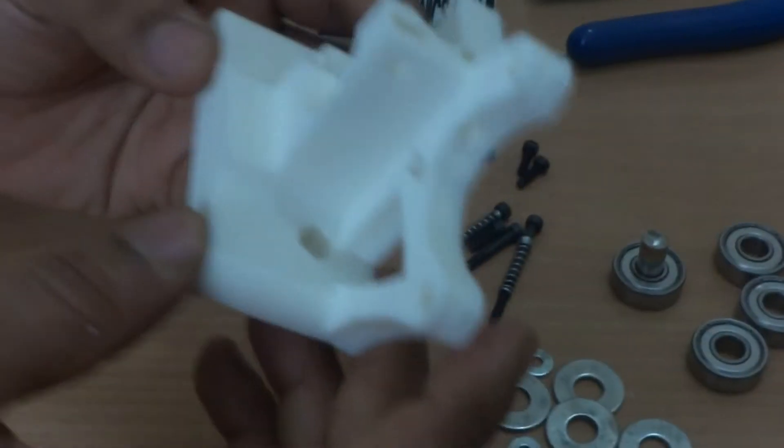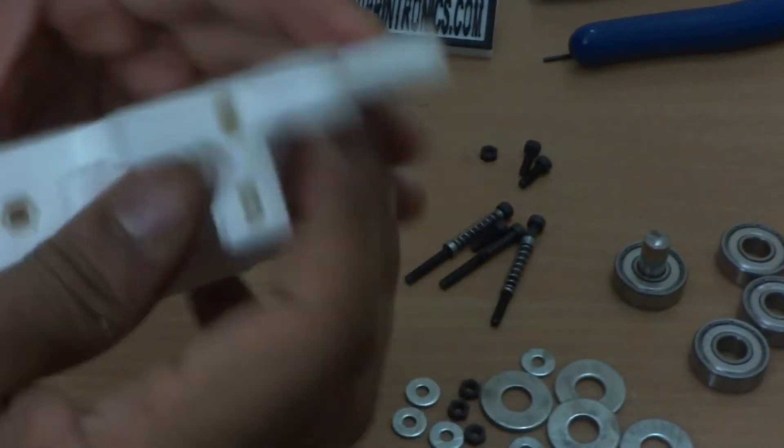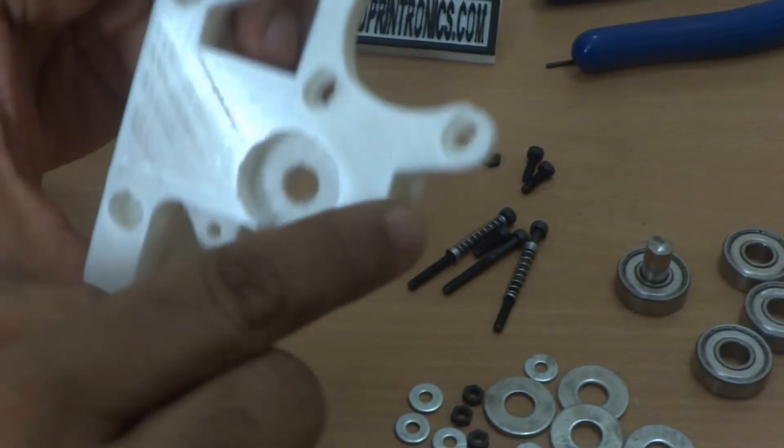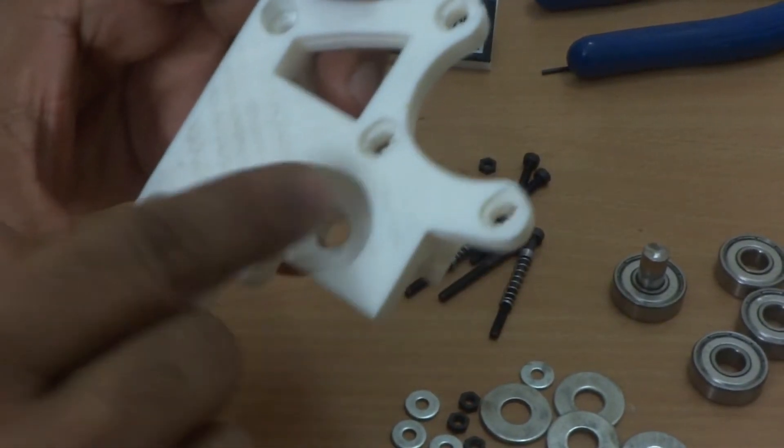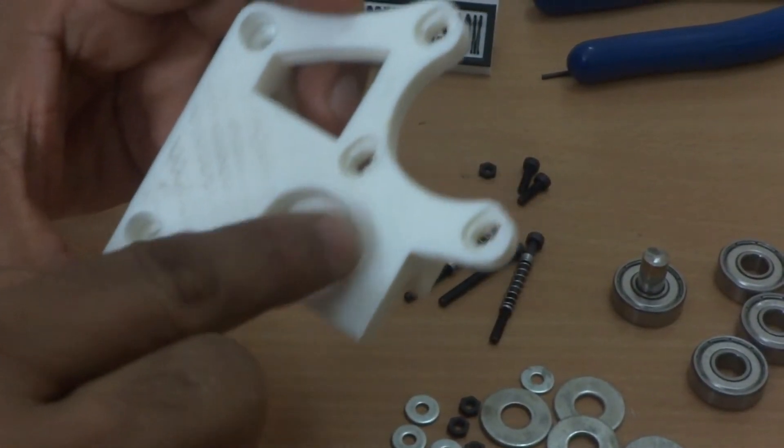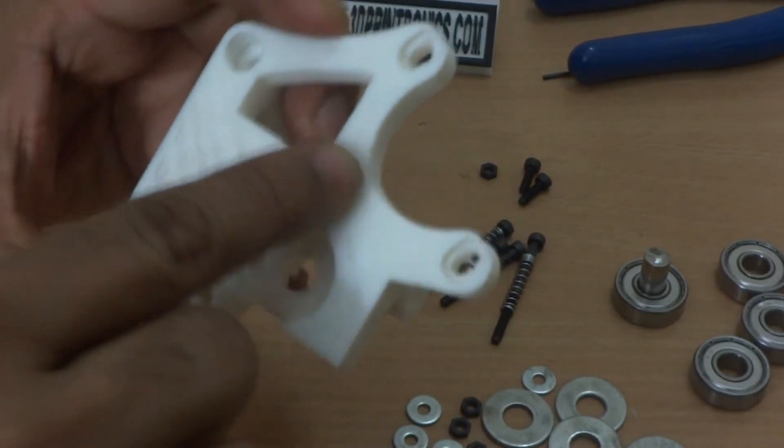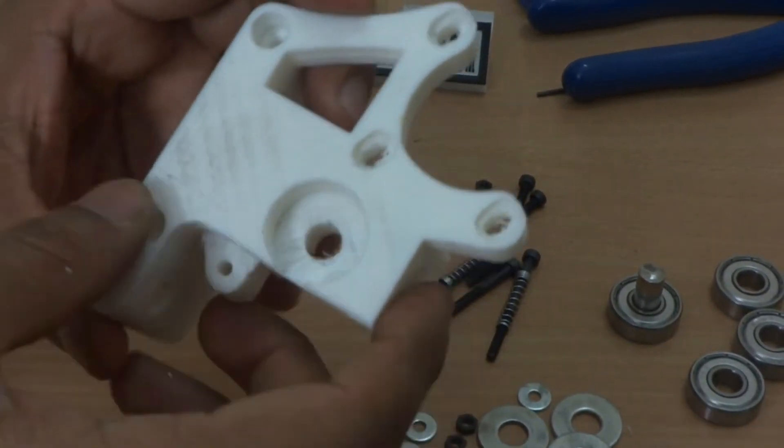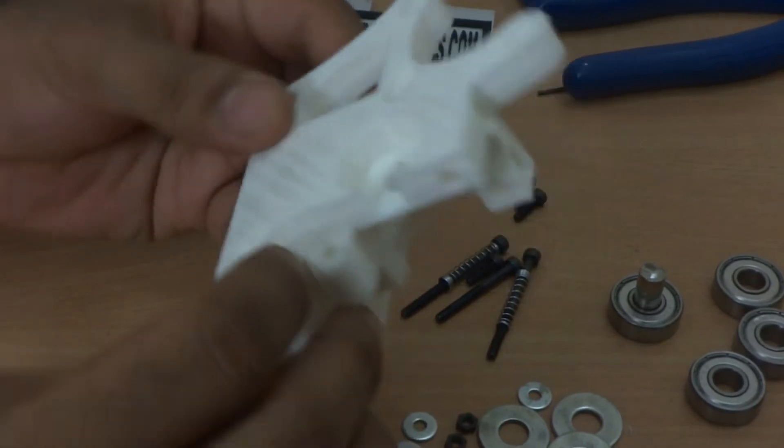First when we supply this kit we clean this complete part. So you see all these parts, all these holes have been cleaned by us. We have also done this beveling over here so that the parts are easily assembled by a person who is new to all these things.